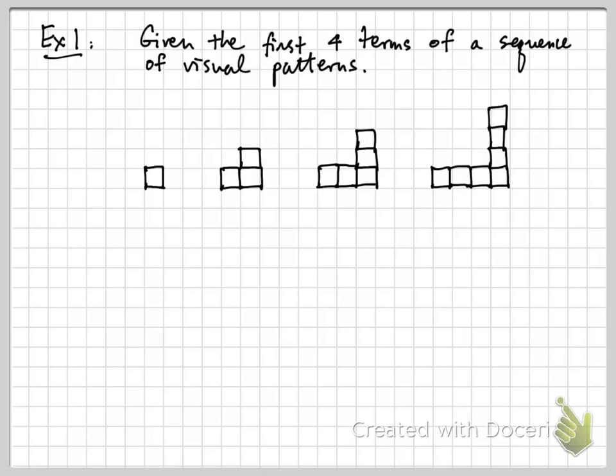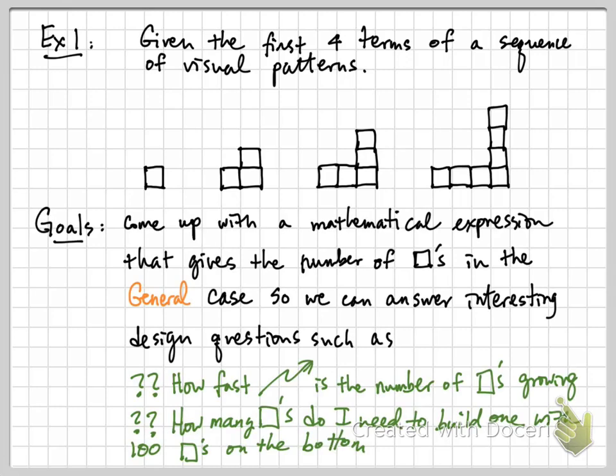Suppose I give you the first four terms of a sequence of visual patterns. Ultimately, we would like to come up with a mathematical expression that gives the number of squares in the general case, so we can answer interesting design questions such as how fast the number of squares is growing as I increase the term in the sequence, or how many squares there will be if I wanted to build a staircase with 100 squares on the bottom.